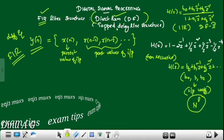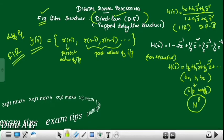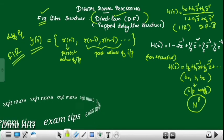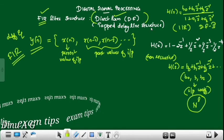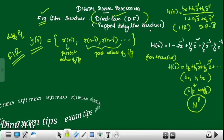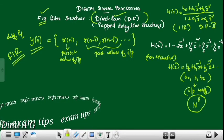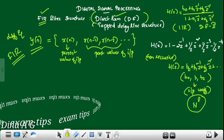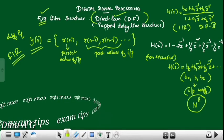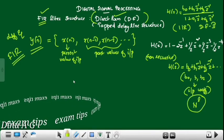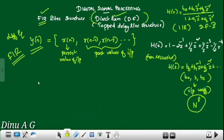But for FIR filter, there is only the direct form structure — no categorization into Form 1 and Form 2. Its alternate name is the Tapped Delay Line Structure.